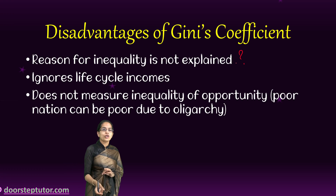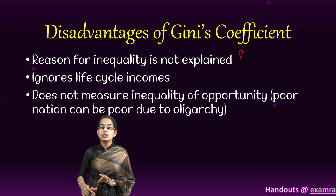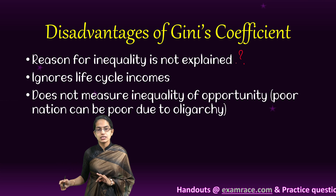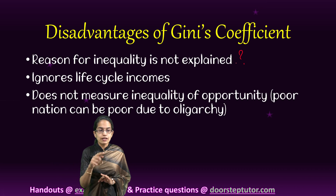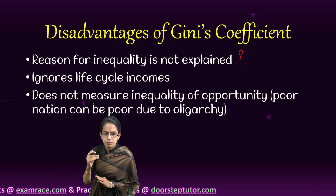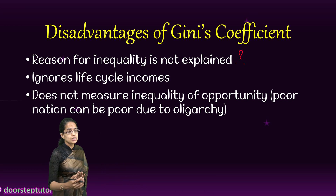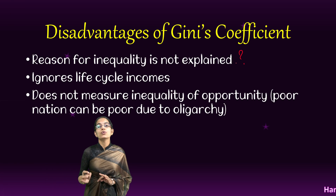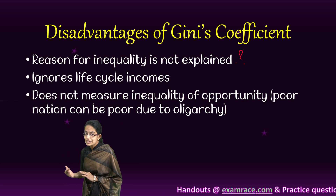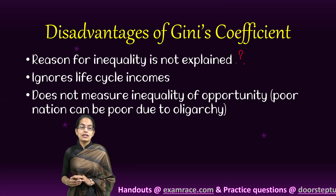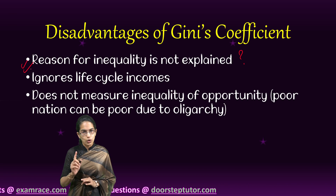For an individual, whatever income has been considered is taken as a parameter, but it ignores any kind of life cycle events — there could be an increase or decrease next month or in six months. Furthermore, it does not measure inequality due to opportunity: poor nations can be poor because of the political setup that exists there, but we are not able to measure that. The reasons for inequality are not able to be explained — that is one of the major disadvantages.